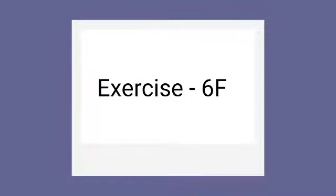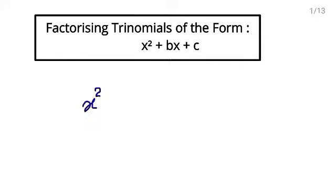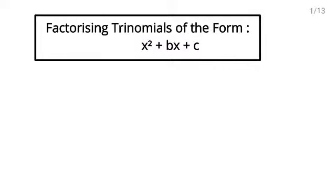Hello everyone, welcome back to your maths class. Students, in chapter number 6, we are learning how to factorize polynomials. In this chapter, you already have learned factorization of different trinomials. You also have learned how to factorize binomials which are in the form of a square minus b square. Now in today's class, you will learn the factorization of trinomials which are in the form of x square plus bx plus c. This is a trinomial because we have three terms in it.